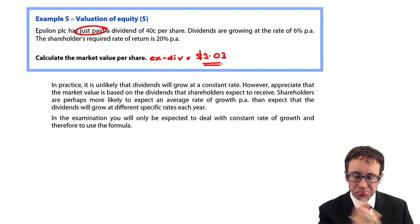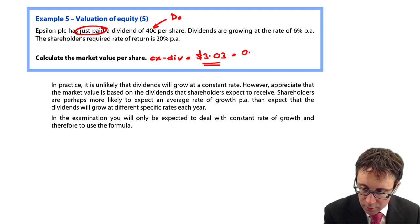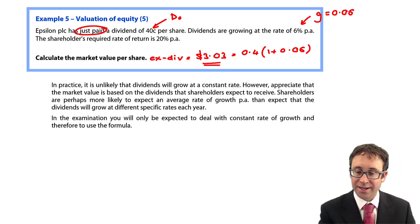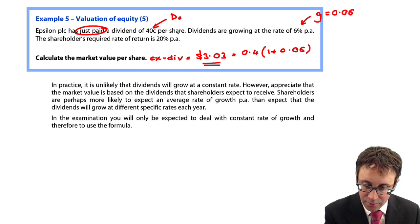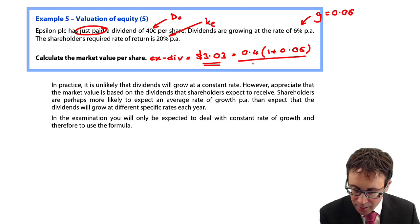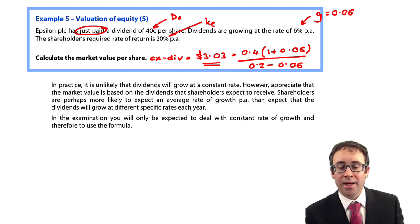Hopefully you got that. You have your dividend of 0.4, so it's 0.4 multiplied by (1 + 0.06) — growth is 6%. And KE is 20%, so divided by (0.2 less 0.06). That gives you the market value per share of $3.03.